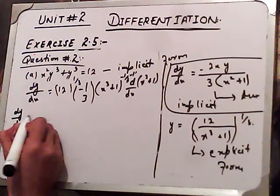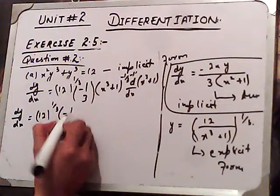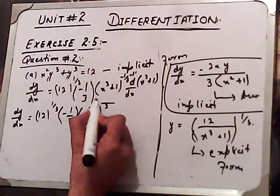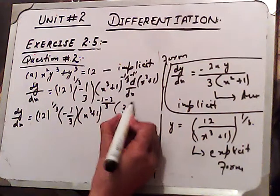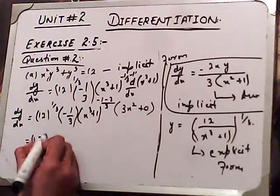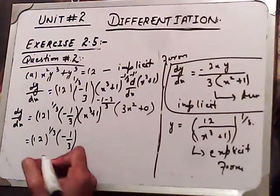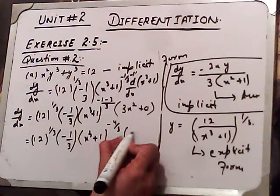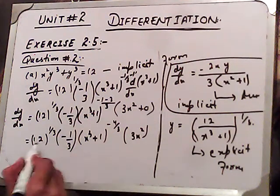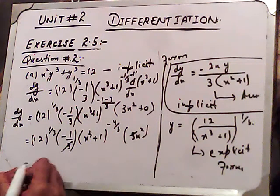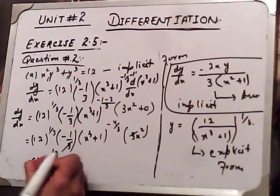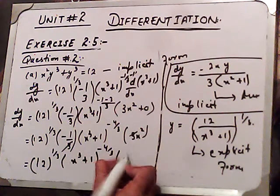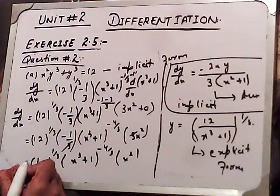dy/dx equals 12 to the power 1/3 times (1/3) times (x cubed plus 1) to the power (1/3 minus 1), which gives exponent minus 2/3 after taking LCM. Then times the derivative of the inner function, which is 3x squared, plus the derivative of the constant 0. This gives 12 to the 1/3 times (1/3) times (x cubed plus 1) to the minus 4/3 times 3x squared.